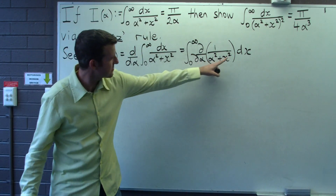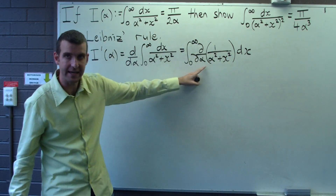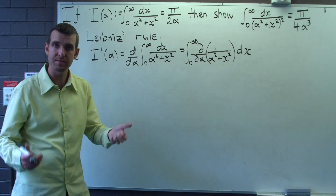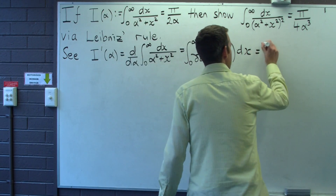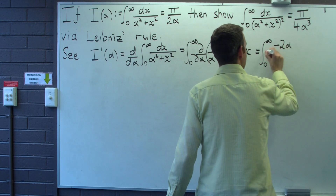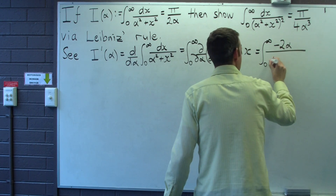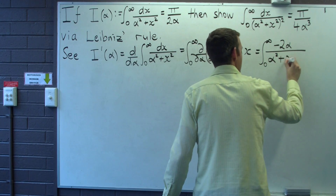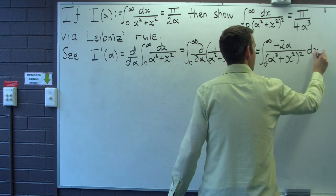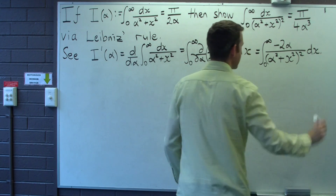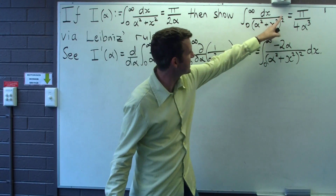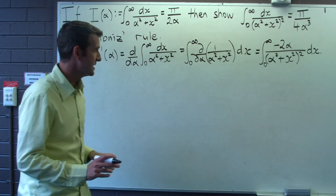Now let's work out this partial derivative. We're going to get a -2α on the top, and the expression on the bottom is going to be squared. Now let's look at what we have — this is almost like the integral we want, but not quite.